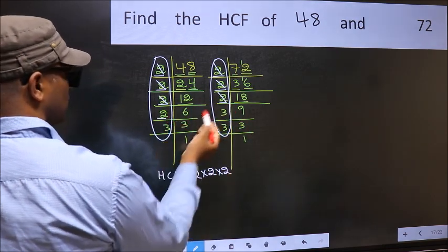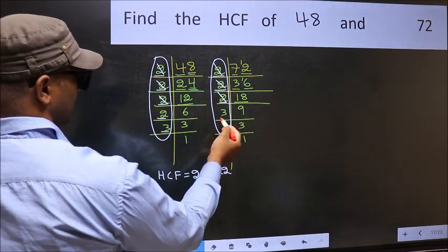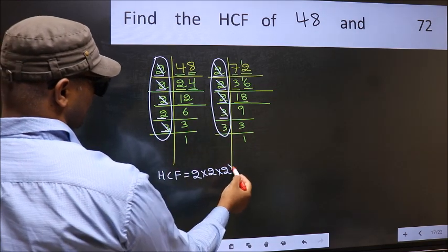Next number 2. Do we have 2 here? No. Next number 3. Do we have 3 here? Yes. So cut 3 right here.